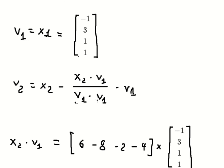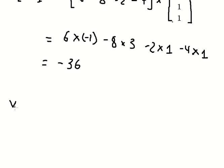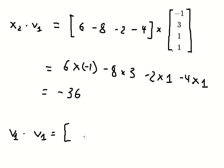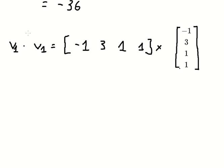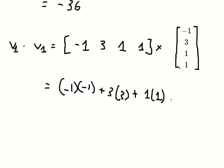Now we need to find v1 dot v1. We compute: negative 1 times negative 1, plus 3 times 3, plus 1 times 1, plus 1 times 1. We calculate this and we get 12.